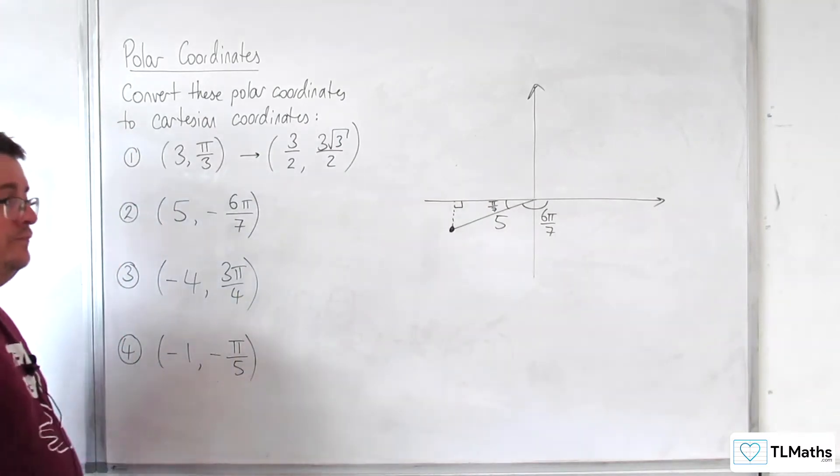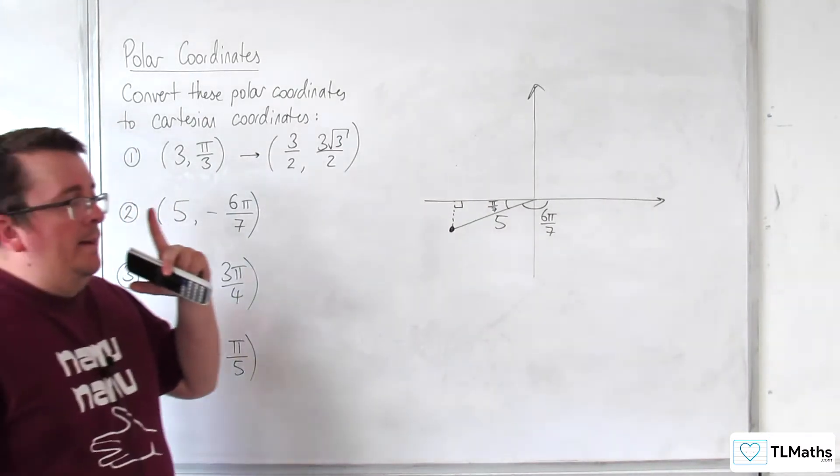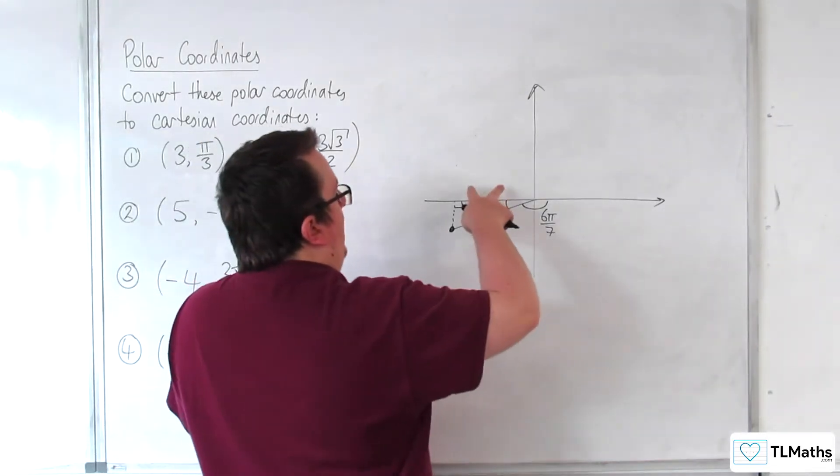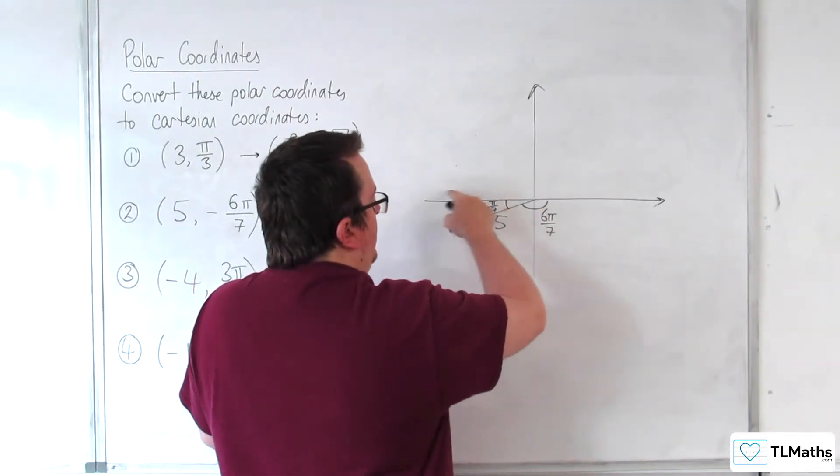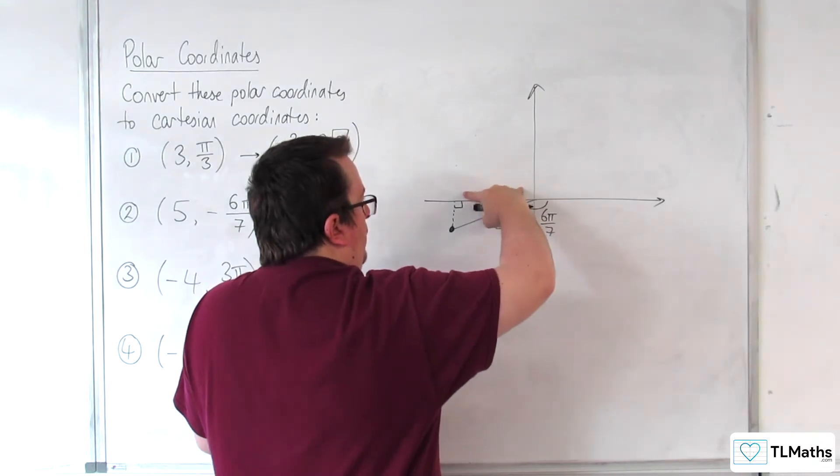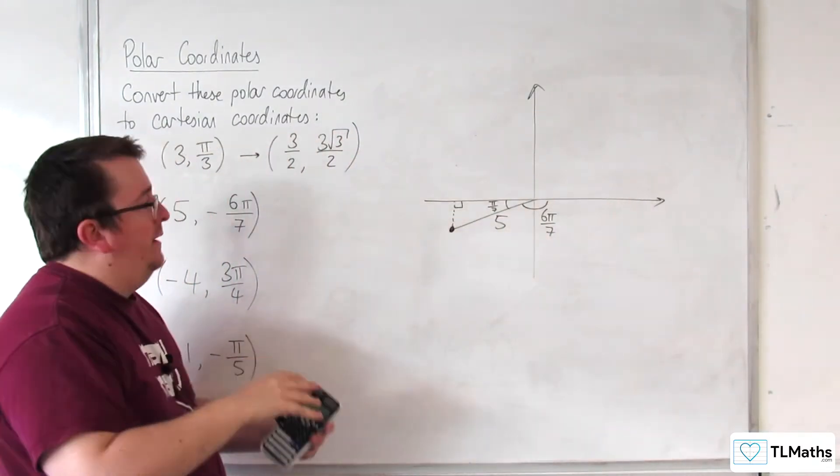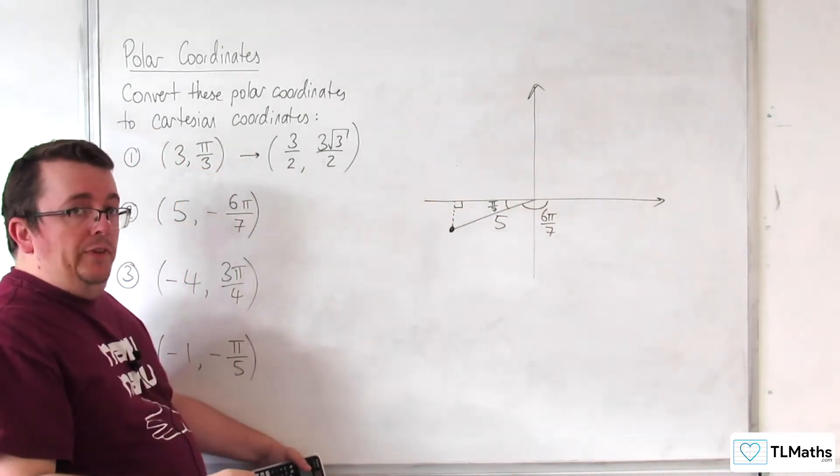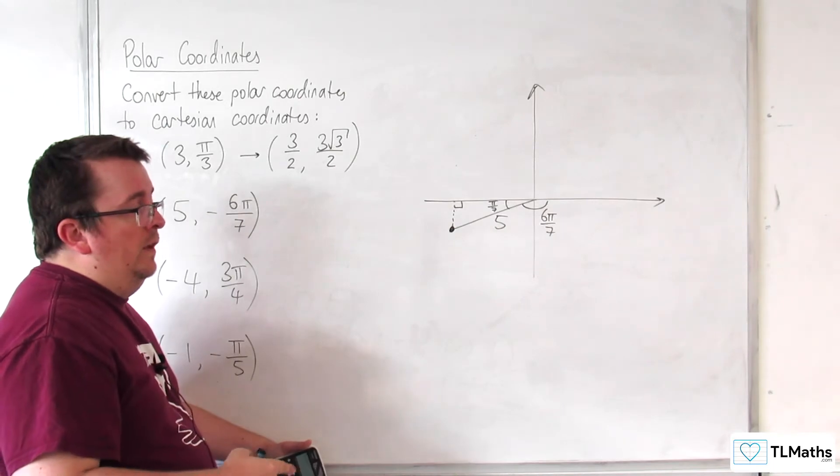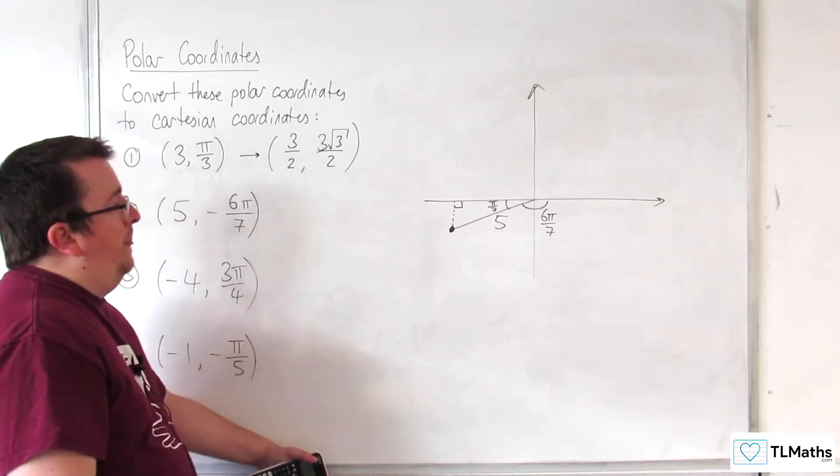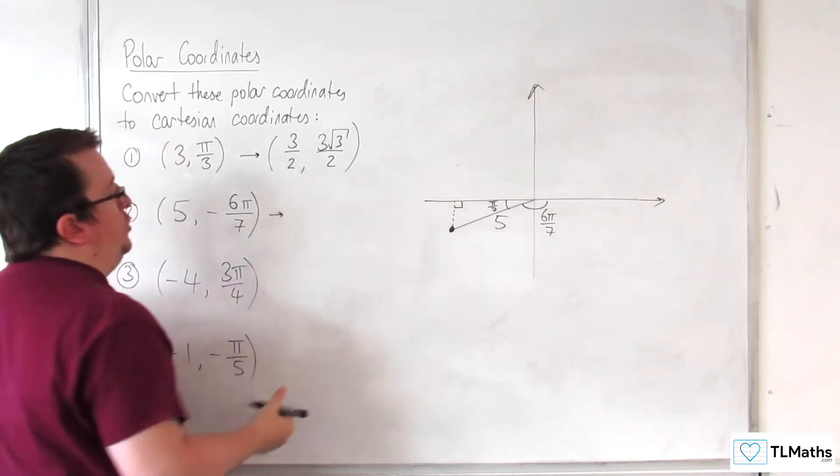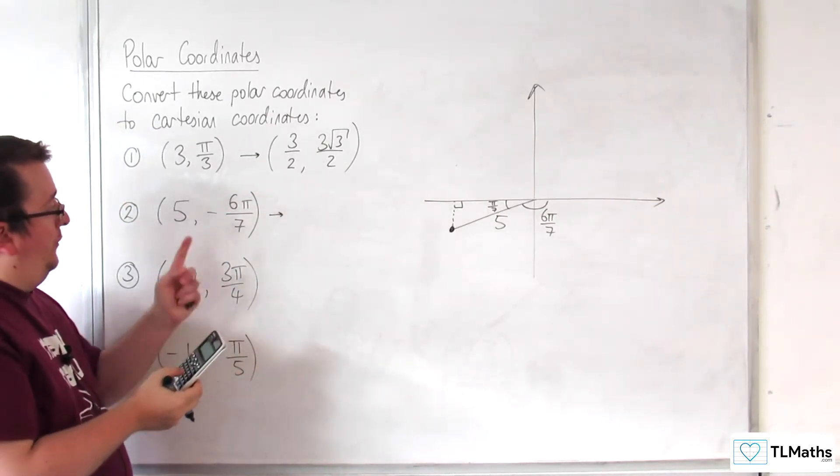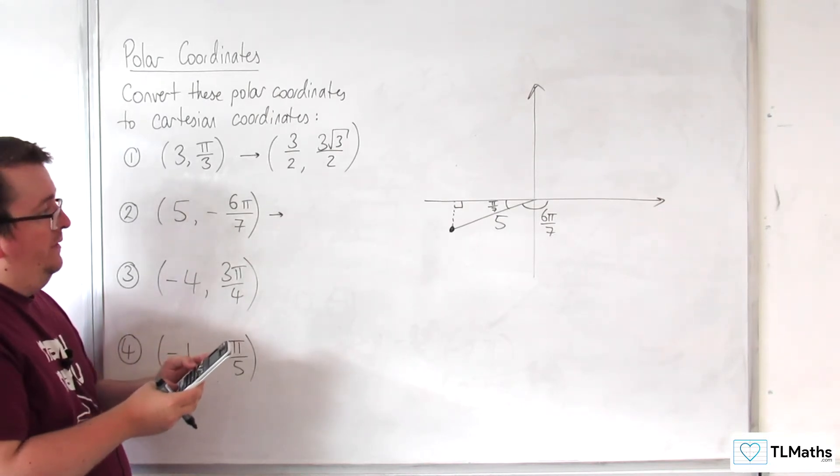Okay. Now, how you do this is really up to you. You could write this as negative, so minus 5 cosine pi over 7, so typing that into your calculator, and minus 5 sine pi over 7. You could do it that way when you've got the diagram. Or, of course, you can put this straight into your calculator as 5 cosine of minus 6 pi over 7.